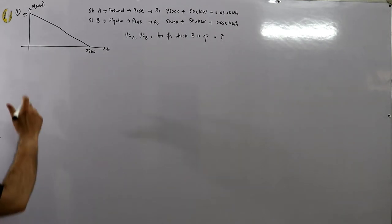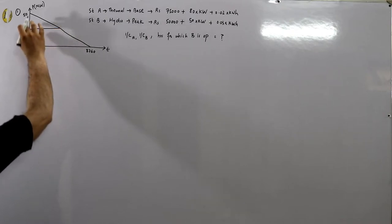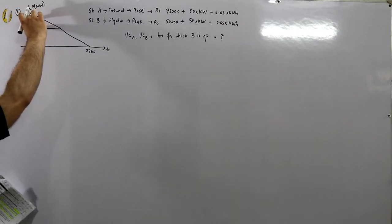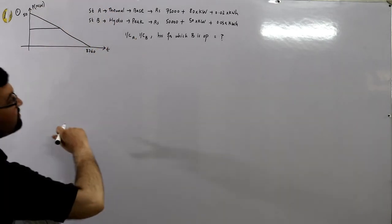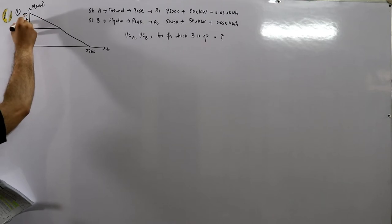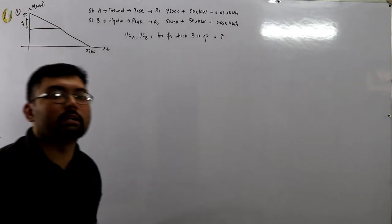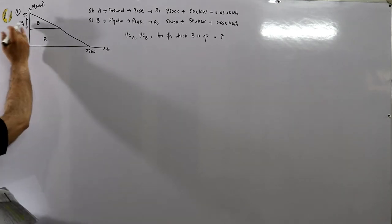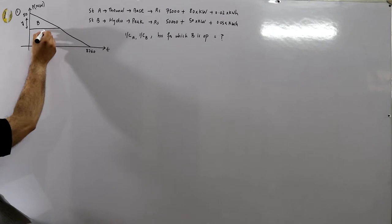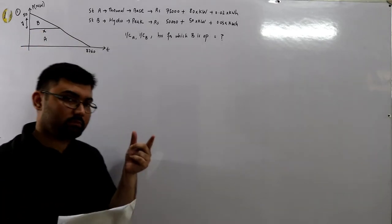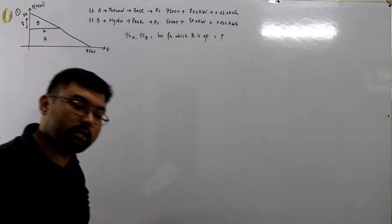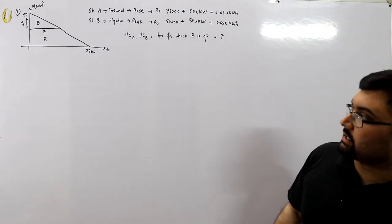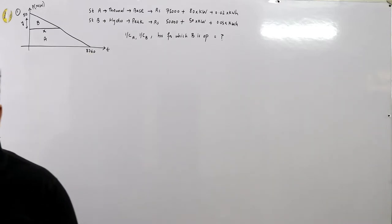We start by subdividing the load duration curve into peak load and base load regions. The peak load portion is a triangle supplied by the peak load station B. Let Y be the installed capacity of station B, and X be the number of hours for which the peak load station runs in parallel with the base load station A.